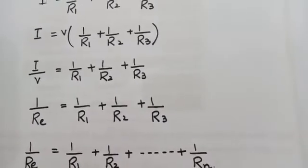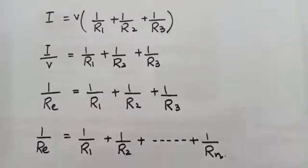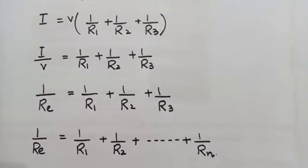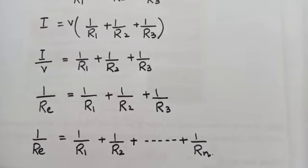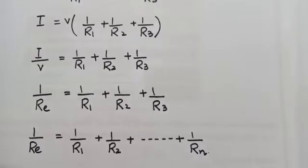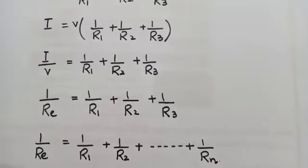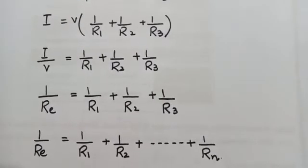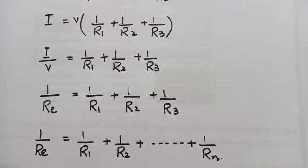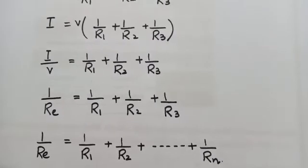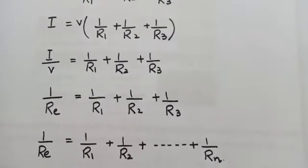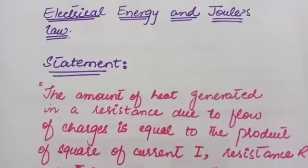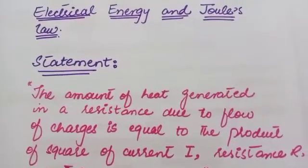Parallel circuits have two advantages over series circuits. Each device in the circuit receives the full battery voltage, and each device may be turned off independently without stopping the current flowing to the other devices. This principle is also used in household wiring.